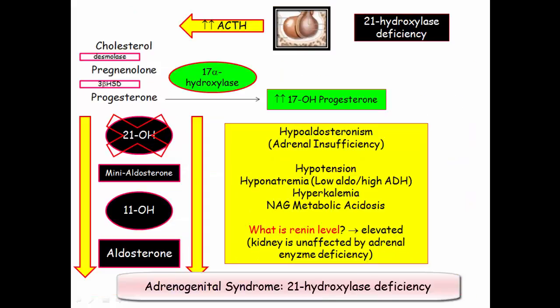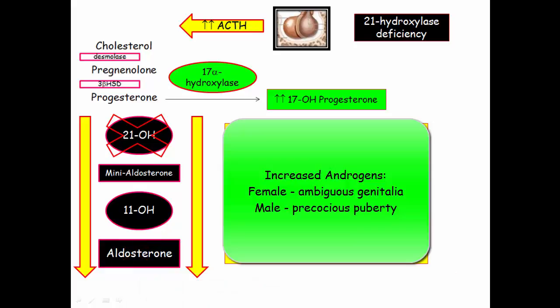As a reminder, in the adrenogenital syndromes we see the same exact pattern. Specifically with 21-hydroxylase deficiency, there is neither cortisol nor aldosterone produced. The neonate presents with the same signs and symptoms of adrenal failure just discussed. The 17-hydroxy pathway is intact with excess production of androgens, so the child will be characterized by ambiguous genitalia if female, and precocious puberty in the male.